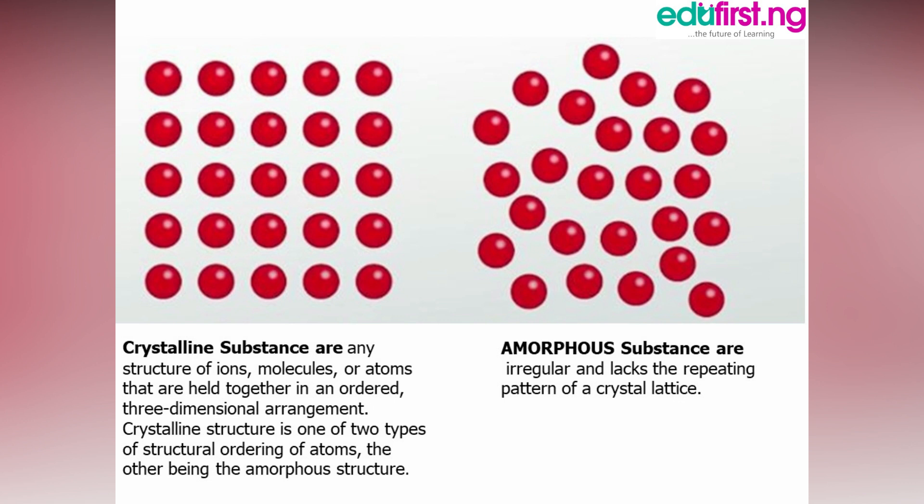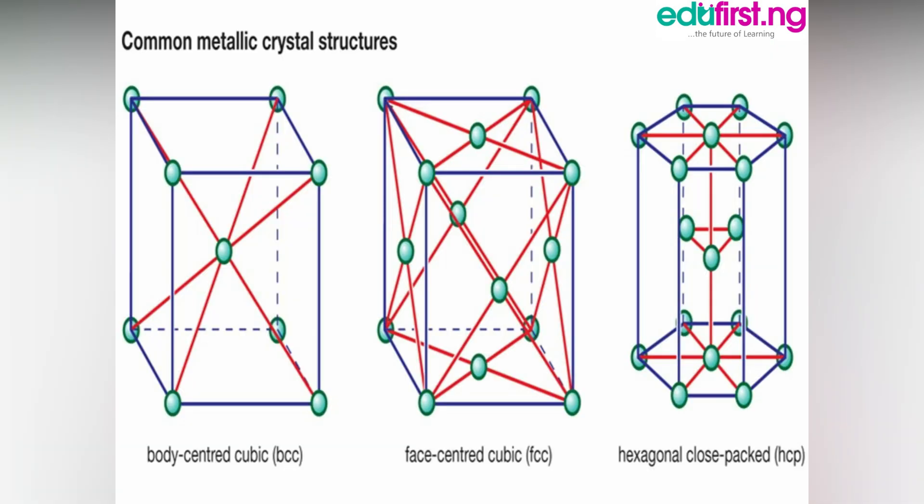The following are the common metallic crystal structures, and I would like us to take note of these structures. We have a body-centered cubic, we have face-centered cubic, and we have hexagonal close-packed. Hexagonal means six — you can see we have six sides: one, two, three, four, five, six. So it's a very simple structure.